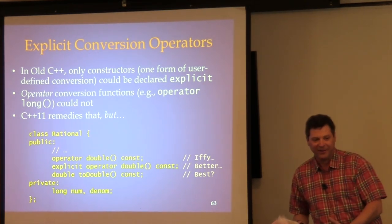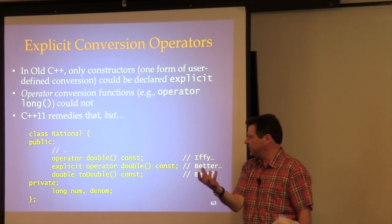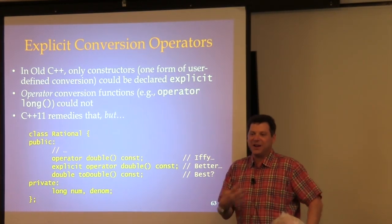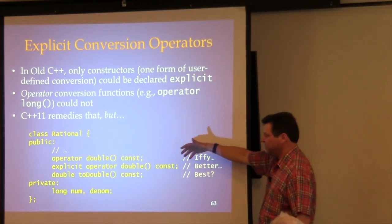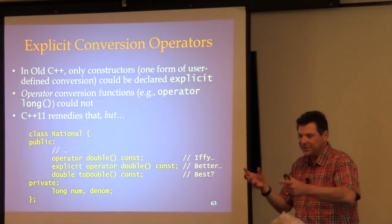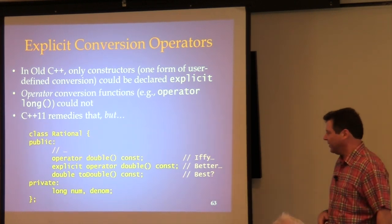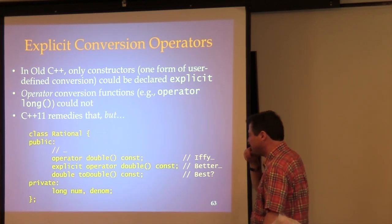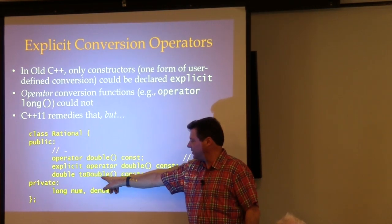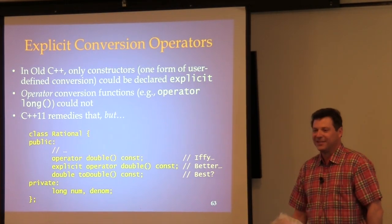The problem in old C++ was there was no way to make conversion operators explicit — you'd get unexpected silent conversions from rational to double when you might not expect them. For that reason, I always recommended never using these functions. C++11 fixes that by allowing you to make them explicit, just like constructors. Now you can avoid silent unexpected conversions. If you pass a rational to a function expecting a double and the conversion is explicit, it's a compiler error.